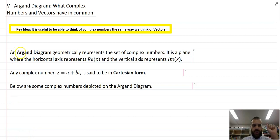First of all, an Argand diagram geometrically represents the set of complex numbers. It is a plane where the horizontal axis represents the real numbers and the vertical axis represents the imaginary numbers. It's a Cartesian looking plane but it's actually an Argand diagram, and our real numbers are represented by the x-axis and our imaginary numbers are represented by the y-axis.